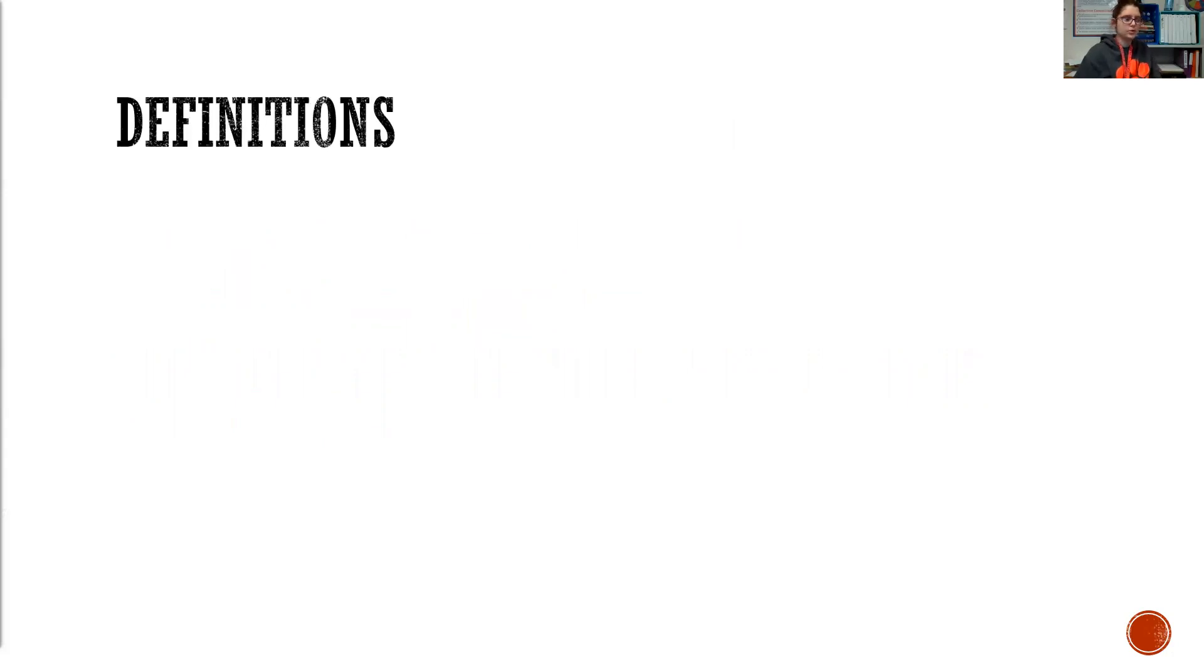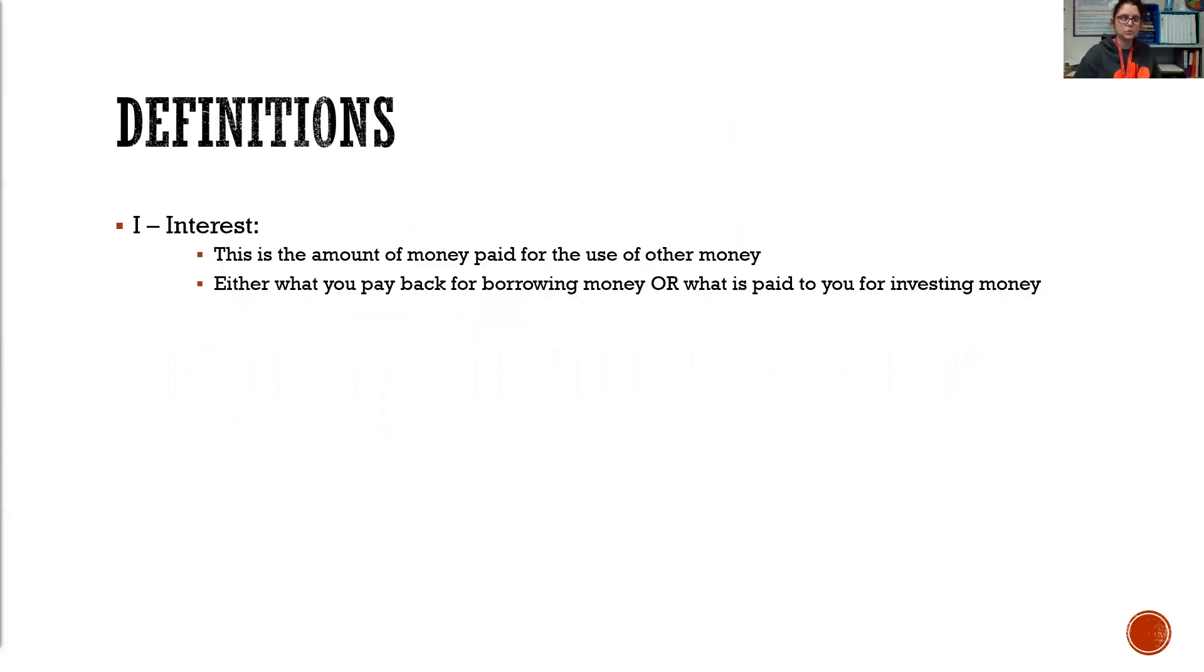What are the definitions? What are the parts of the formula? I is interest. This is the amount of money paid for the use of other money. When you borrow money, it's the amount of money you're paying to have borrowed that money. And if you're investing money, it's the amount of money that is paid to you for putting your money in the bank or to an investment account.